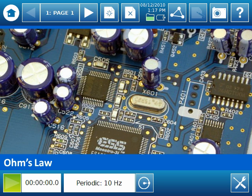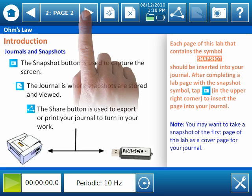The activity automatically loads to the first page. For those Spark Labs that come with your Spark Science Learning System, this is going to be a title page. To navigate through the pages in a Spark Lab, use the right and left arrows at the top of the screen.